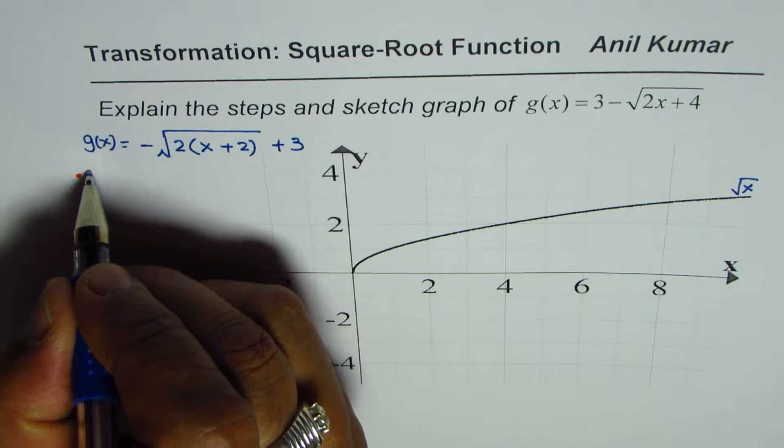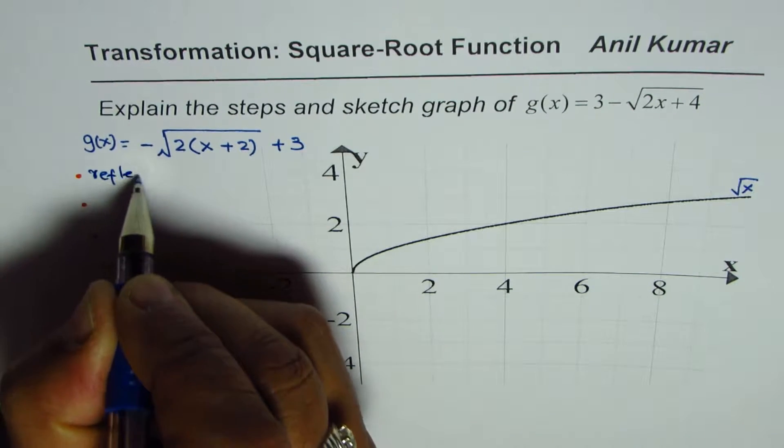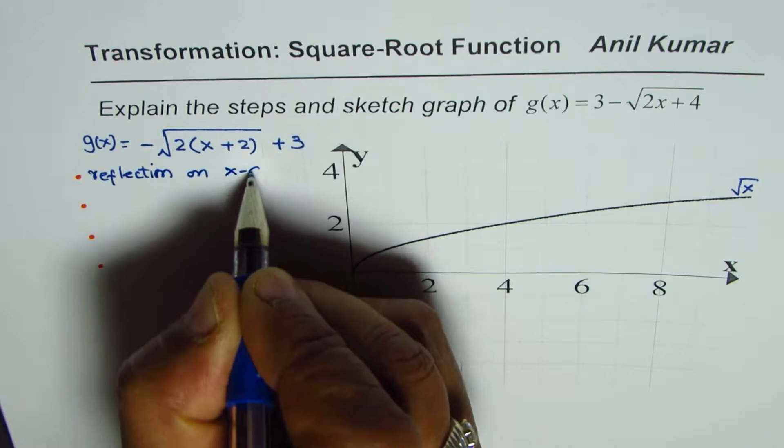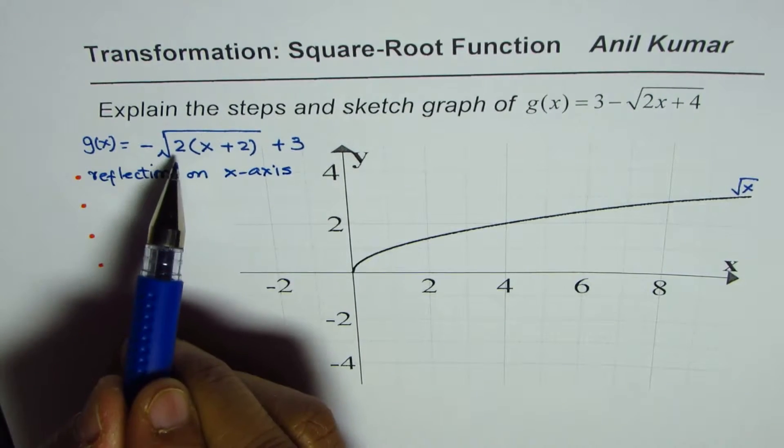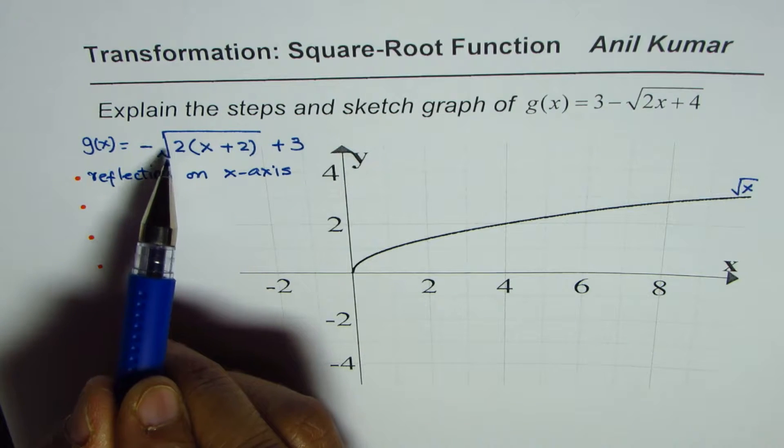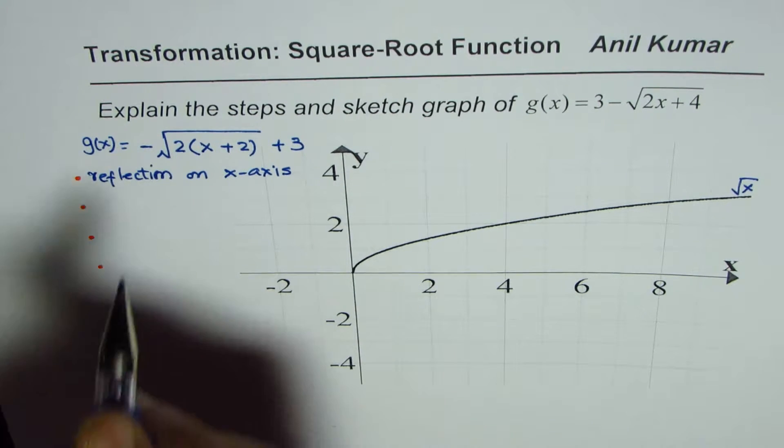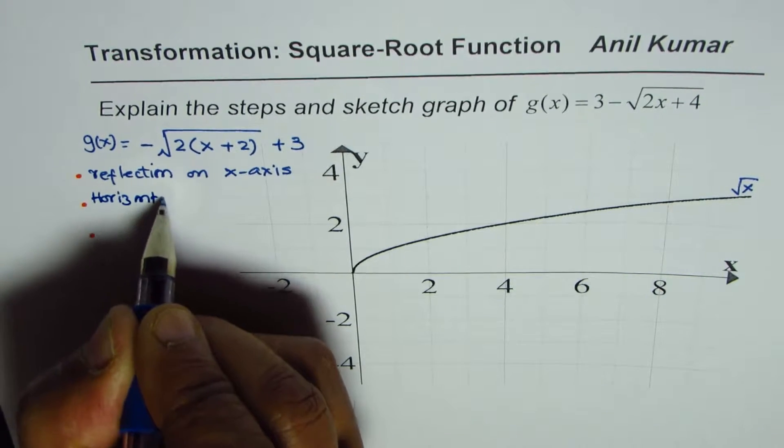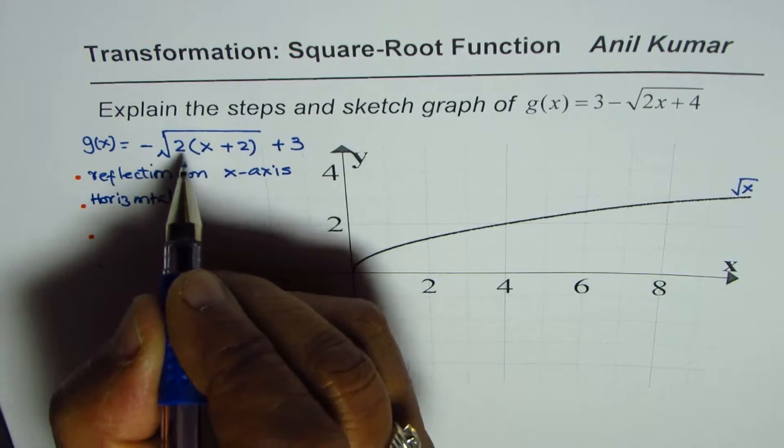Then as we get into square root, we are dealing with horizontal transformations. This 2 means horizontally—tell me—compressed.